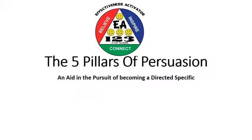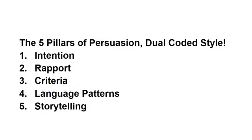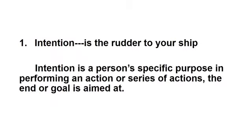The Five Pillars of Persuasion — an aid in the pursuit of becoming a directed specific. The Five Pillars of Persuasion, dual-coded style: 1. Intention. 2. Rapport. 3. Criteria. 4. Language Patterns. 5. Storytelling.